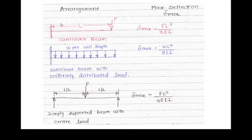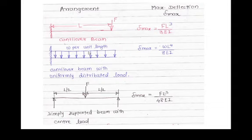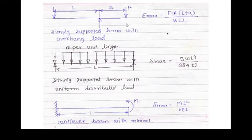For a cantilever beam with one end fixed and one end free, with force F applied at distance L, the maximum deflection is δ_max = FL³ / (3EI). For a uniformly distributed load of magnitude w per unit length, δ_max = wL⁴ / (8EI). For a simply supported beam with span L and point load at the center, δ_max = FL³ / (48EI).